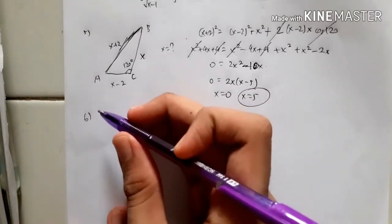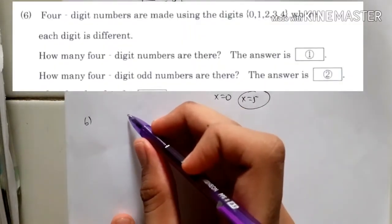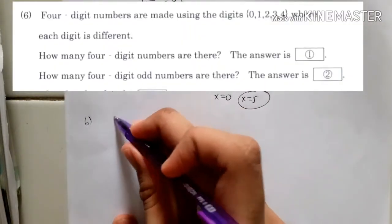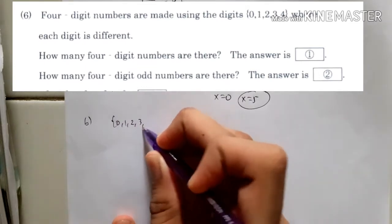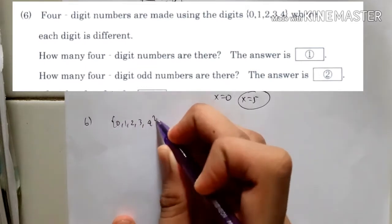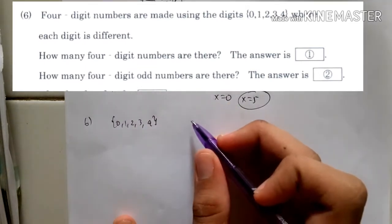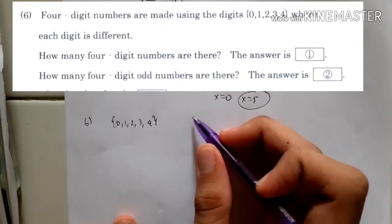And now for number 6, you have to make 4-digit numbers using the digits 0, 1, 2, 3, 4, where each digit is different. So how many 4-digit numbers are there?